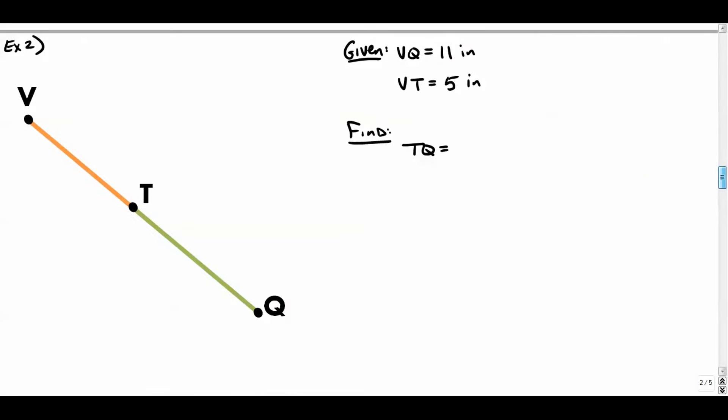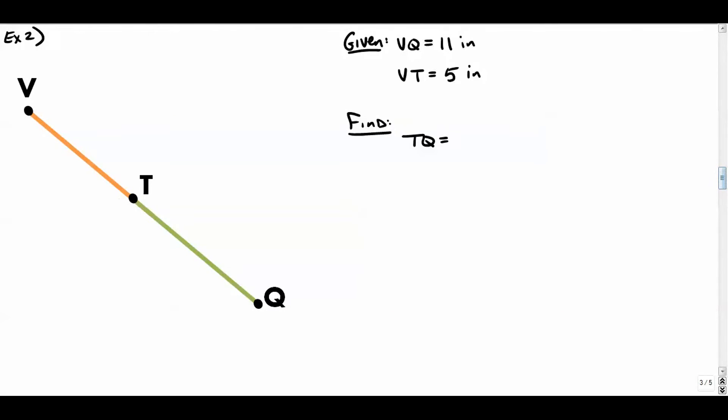Number two. In number two, we're going to look at a little bit more of a complicated example. It's not too challenging, but it's different than number one. The given information is that the entire Segment is 11 inches. And the orange Segment, I color-coded these so we can see a little bit easier. The orange Segment is five inches. And the question is asking you to find the length of the green Segment. The green Segment is sort of what we're looking for here. In order to do that, we're going to write down our Segment addition postulate.